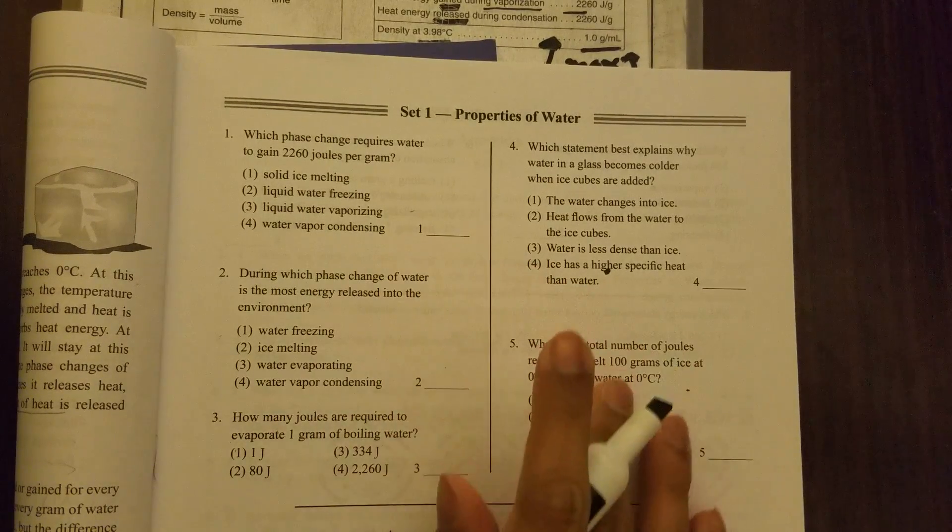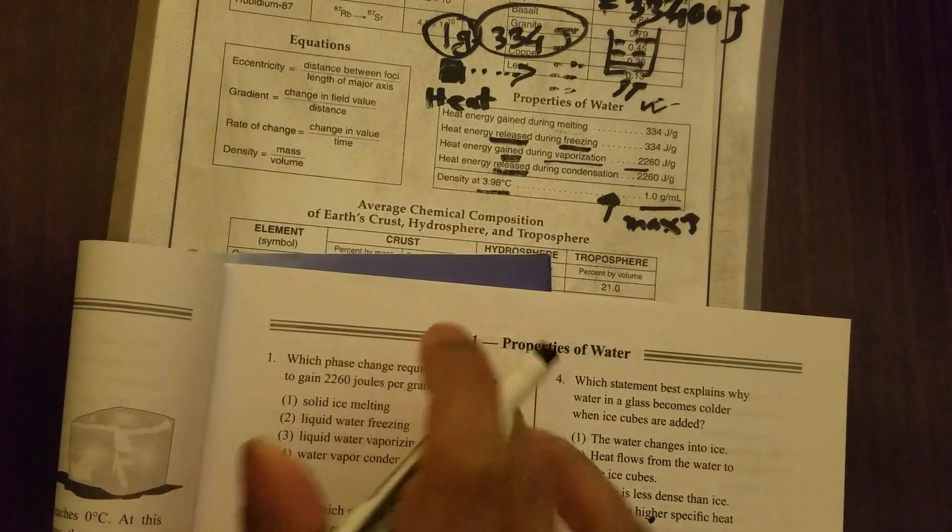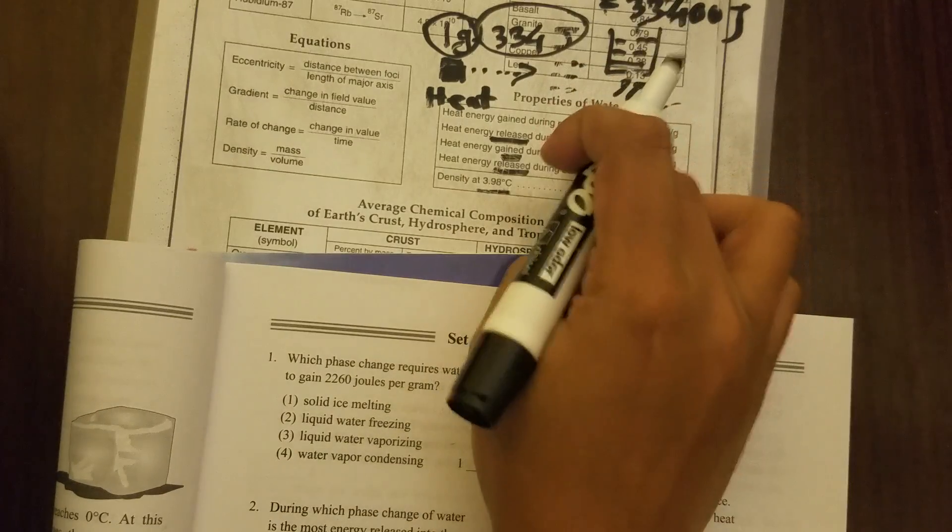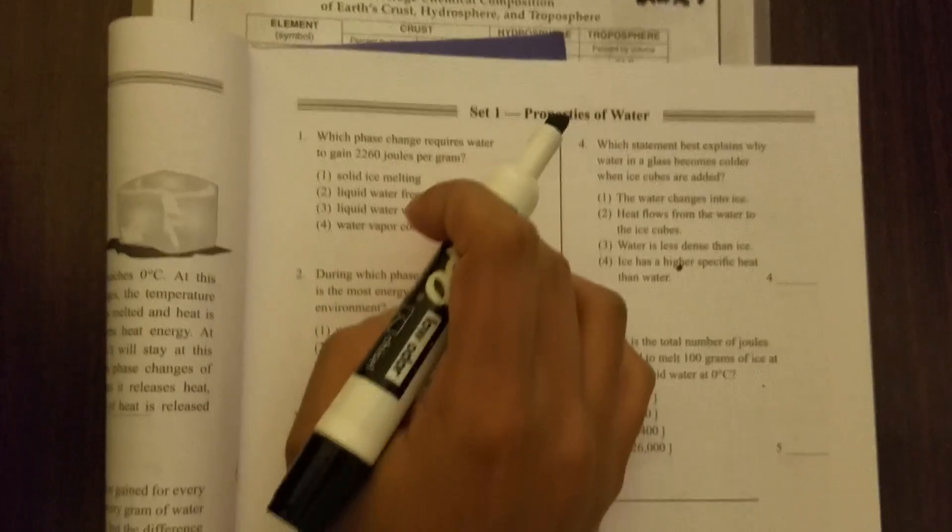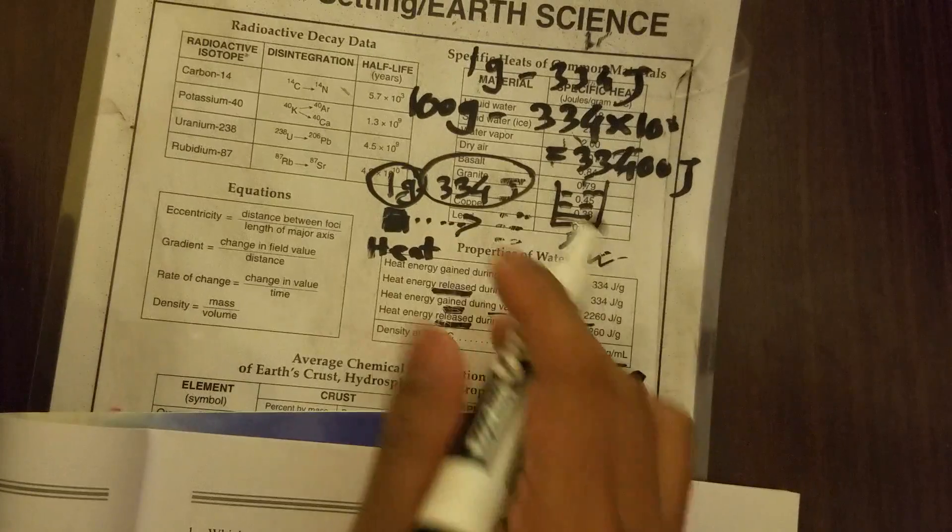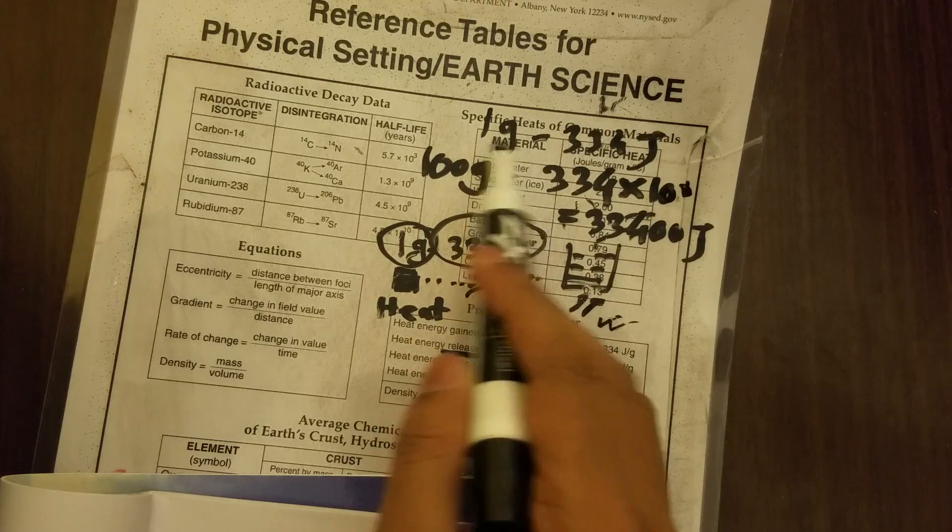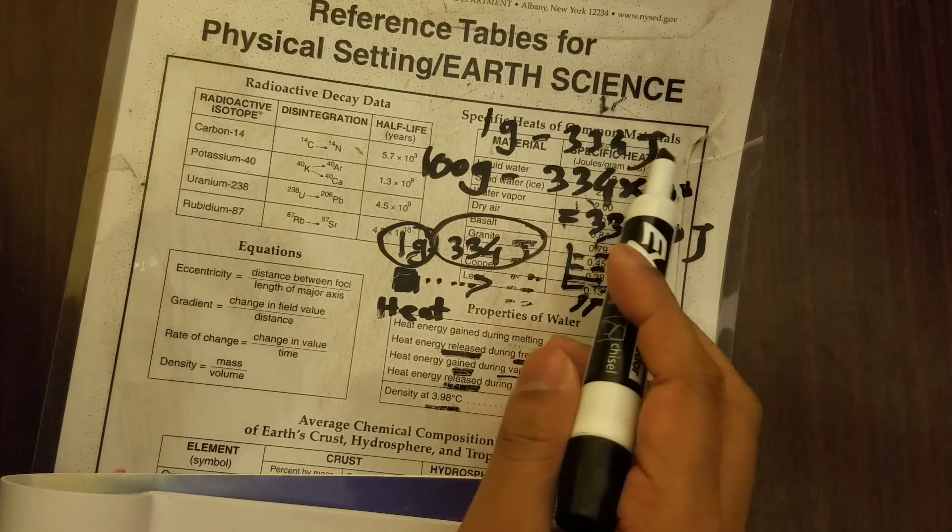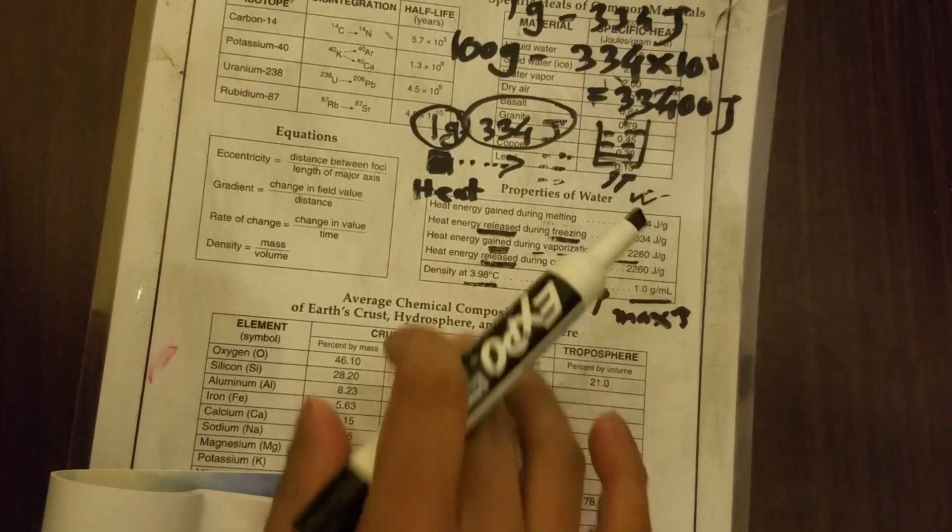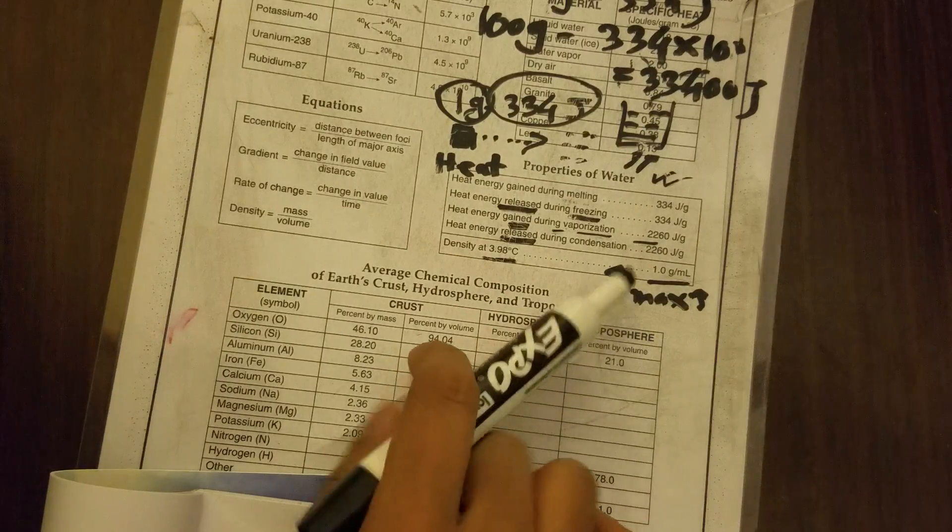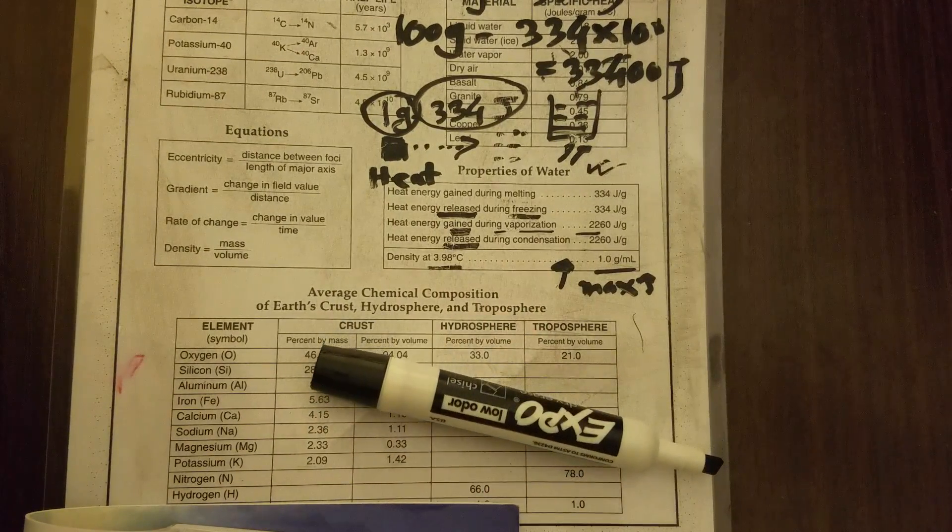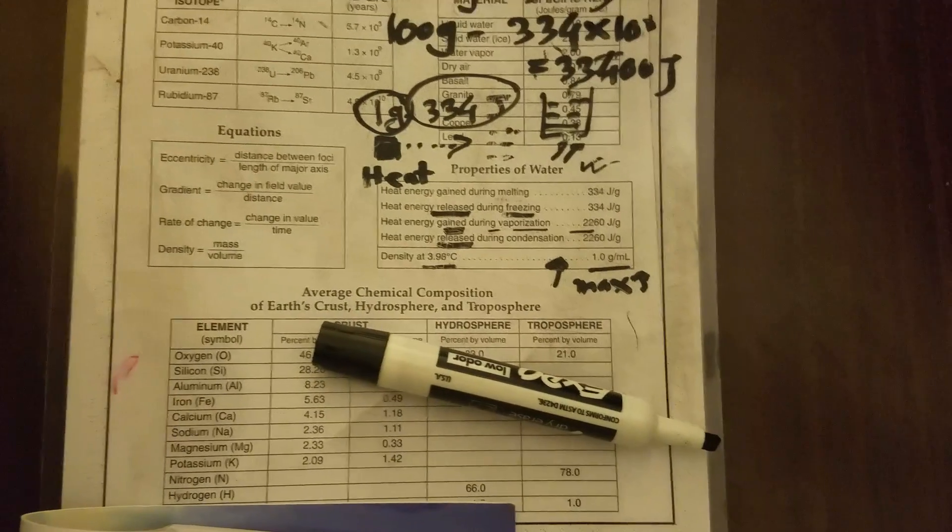I hope that you now know the properties of water and how to apply this knowledge to solve Regents questions. In the next video I'll be talking about specific heats of common minerals. There are five tables on the first page, so we'll be talking about each of them later on. That's it for today everyone. Thanks for watching and I hope to see you all next time.